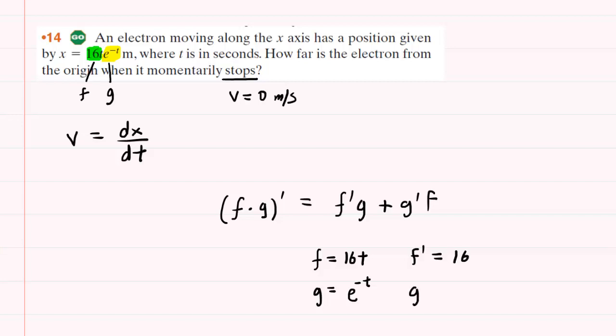The derivative of e to the negative t, there's a rule you can follow when computing the derivative of e raised to a constant in front of your variable t. If you want to do the derivative of e raised to a constant t with respect to time, then according to the chain rule, you would have e raised to the constant t multiplied by that constant. In this case, if you look carefully, the constant that's in front of the t variable is a negative 1.